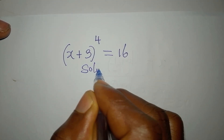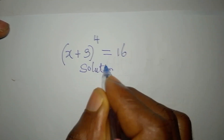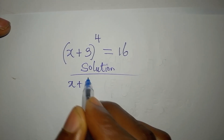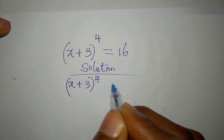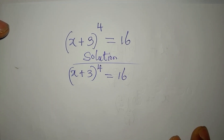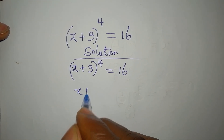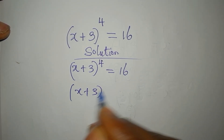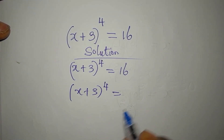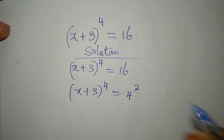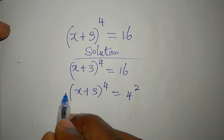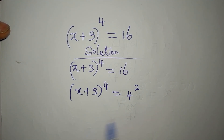Let's work on this right away: (x + 3) to the power of 4 equals 16. This is (x + 3) to the power of 4, and 16 here can be written as 4 to the power of 2.